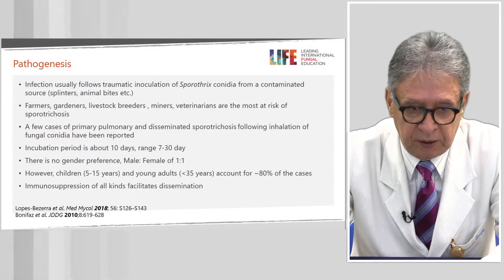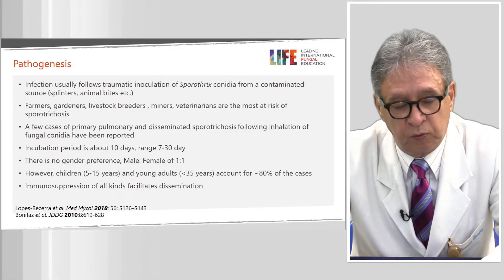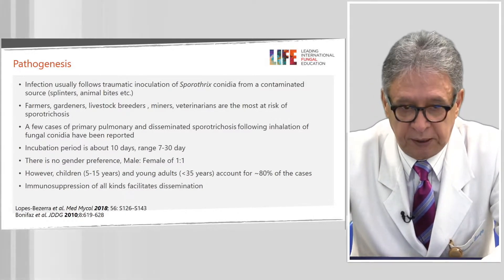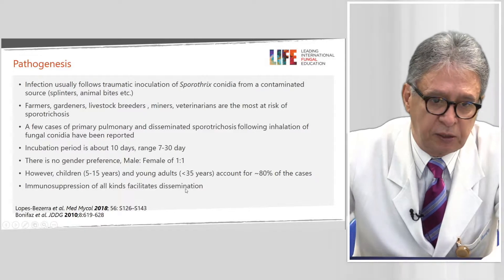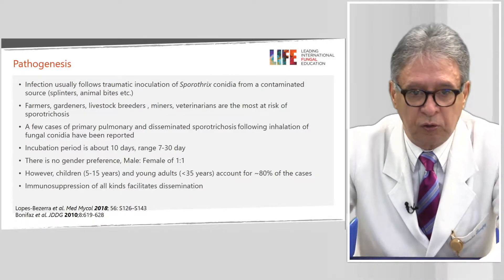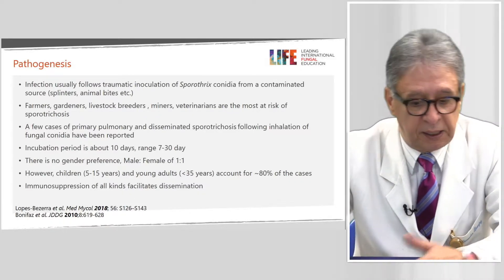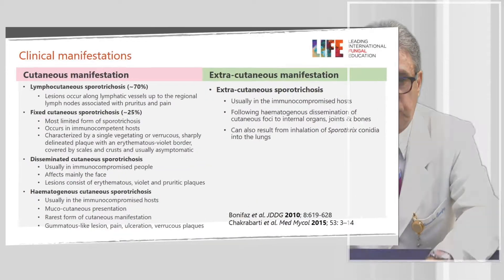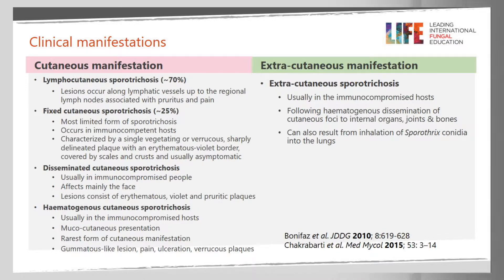There are no gender preferences — the male to female ratio is one to one. In our experience, one-third of cases are located in children. And the most important group is young adults, representing about 30% of cases. Remember that this disease could change its conduct if you have dissemination. The clinical manifestations show that sporotrichosis is a classical polymorphic disease.